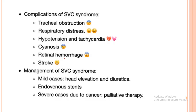Complications of superior vena cava syndrome: if the obstruction is very large, it will also obstruct the trachea, causing respiratory distress. Decreased blood returning to the right atrium causes hypotension. The heart compensates by increasing its rate, causing tachycardia. In late stages, decreased oxygenation leads to cyanosis and potentially retinal hemorrhage. The brain is also very sensitive to oxygenation — if oxygen supply decreases, it may cause a stroke.